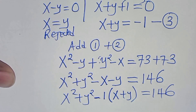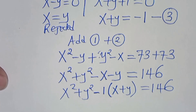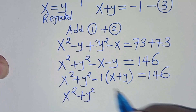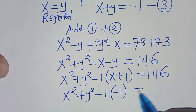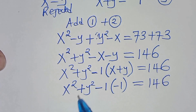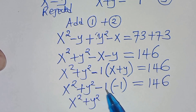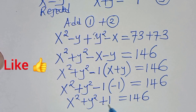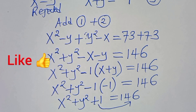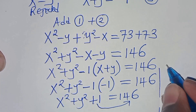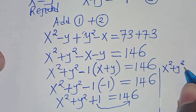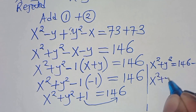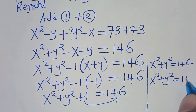Now, x plus y is what we have in equation 3. Equation 3 gives x plus y equals minus 1, so substituting minus 1, we have x squared plus y squared minus 1 times minus 1, this is equal to 146. Therefore, x squared plus y squared plus 1 equals 146. Taking plus 1 on the right-hand side, we have x squared plus y squared equals 146 minus 1. And this implies that x squared plus y squared is equal to 145.